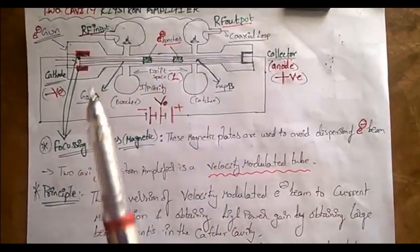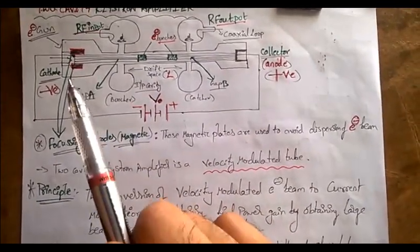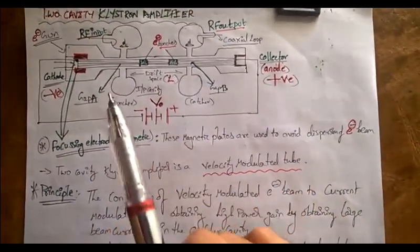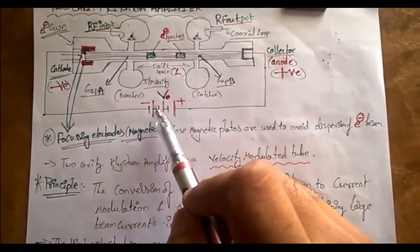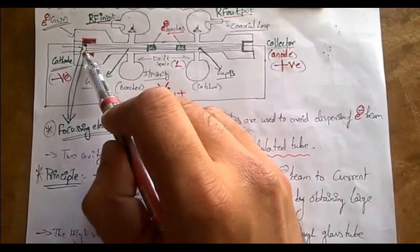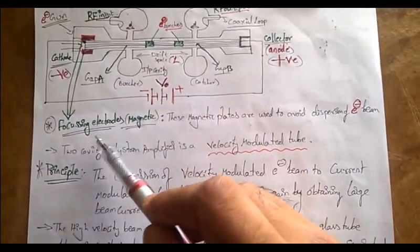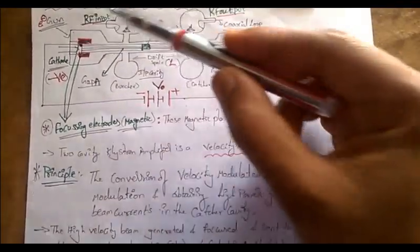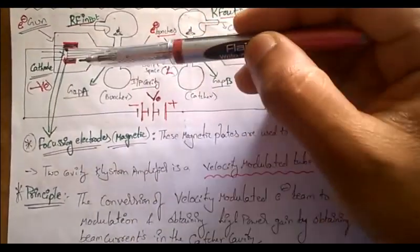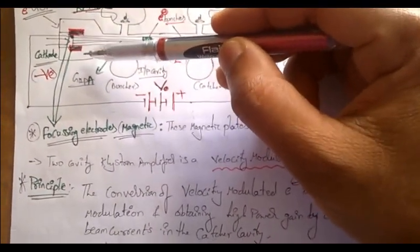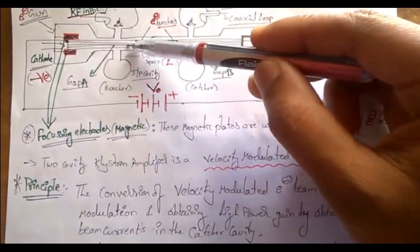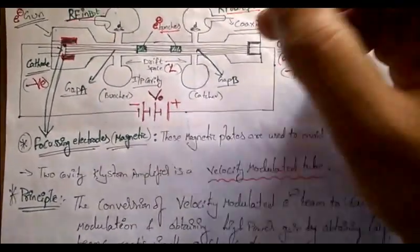The input is given to the negative terminal of the voltage source and the collector output is taken at the positive. When the negative terminal is connected to the input of the two cavity klystron amplifier, the electron beam enters. Since electrons have the nature of dispersion and may go in random directions, we place magnetic focusing electrodes so that the electron beam does not diverge.